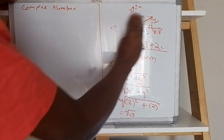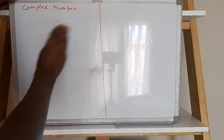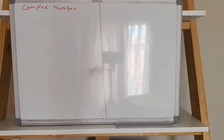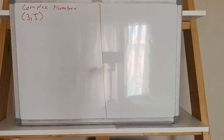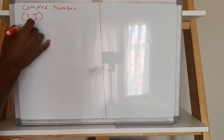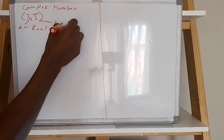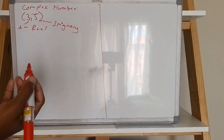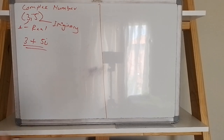Sometimes they give you coordinates and ask you to represent in cartesian or polar form. For example, given coordinates three is to five, you need to represent this in both cartesian and polar form. In cartesian form, x represents the real part and y represents the imaginary part, so the cartesian form is simply three plus five i.